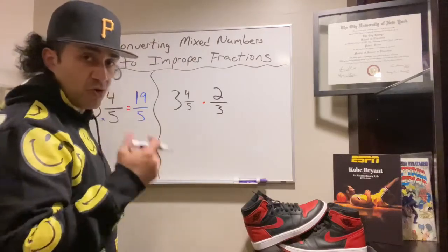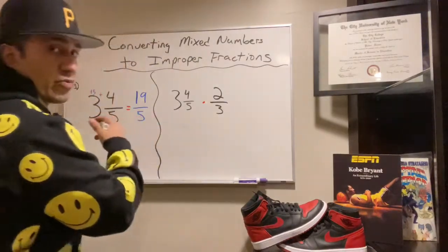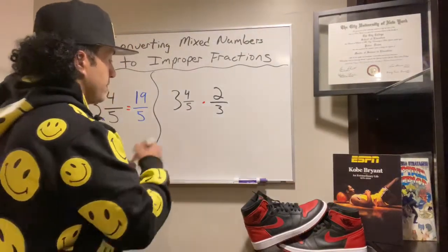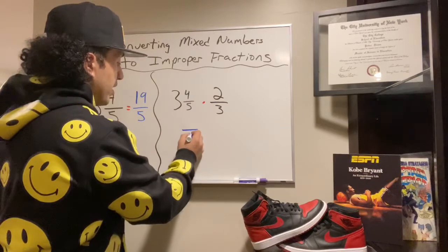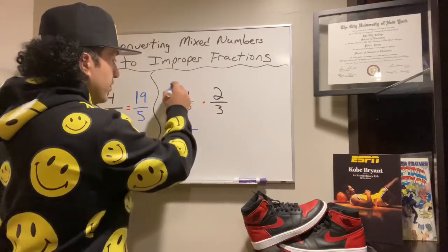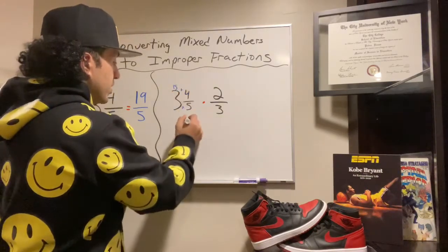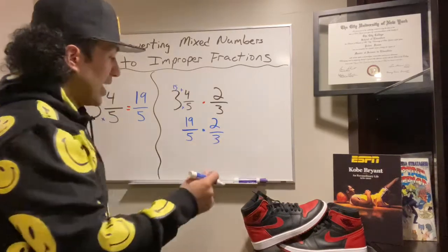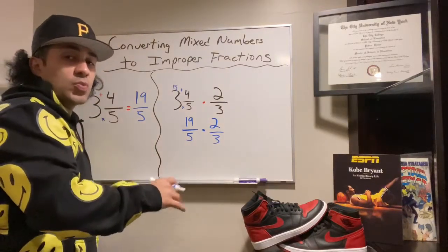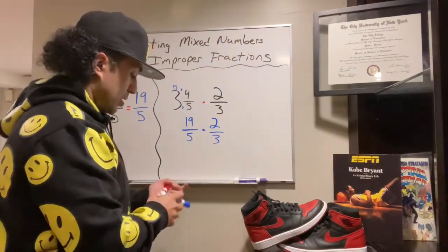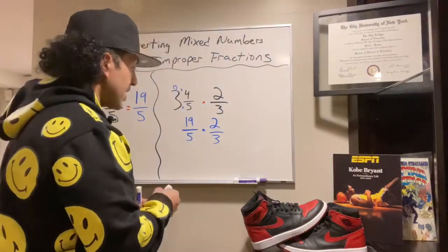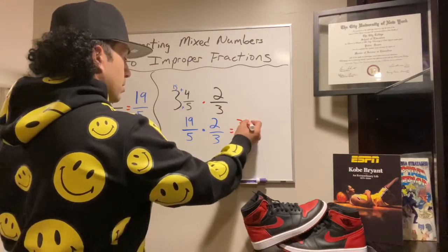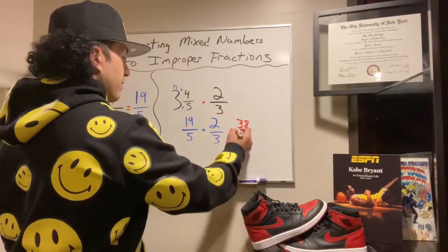We've already done that conversion, but I'm going to rewrite it. I'll start by rewriting the denominator five: three times five is 15, and 15 plus 4 is 19. The multiplication stays the same and I bring down my two-thirds. Now I can just follow the rules of multiplying fractions. 19 times 2 is 38, and 5 times 3 is 15.